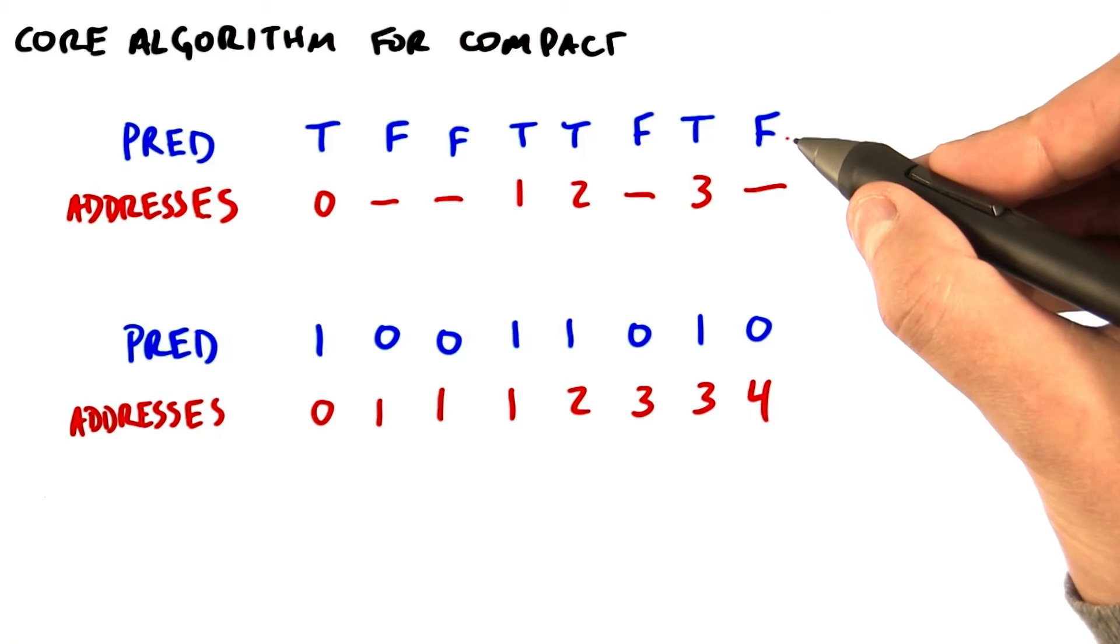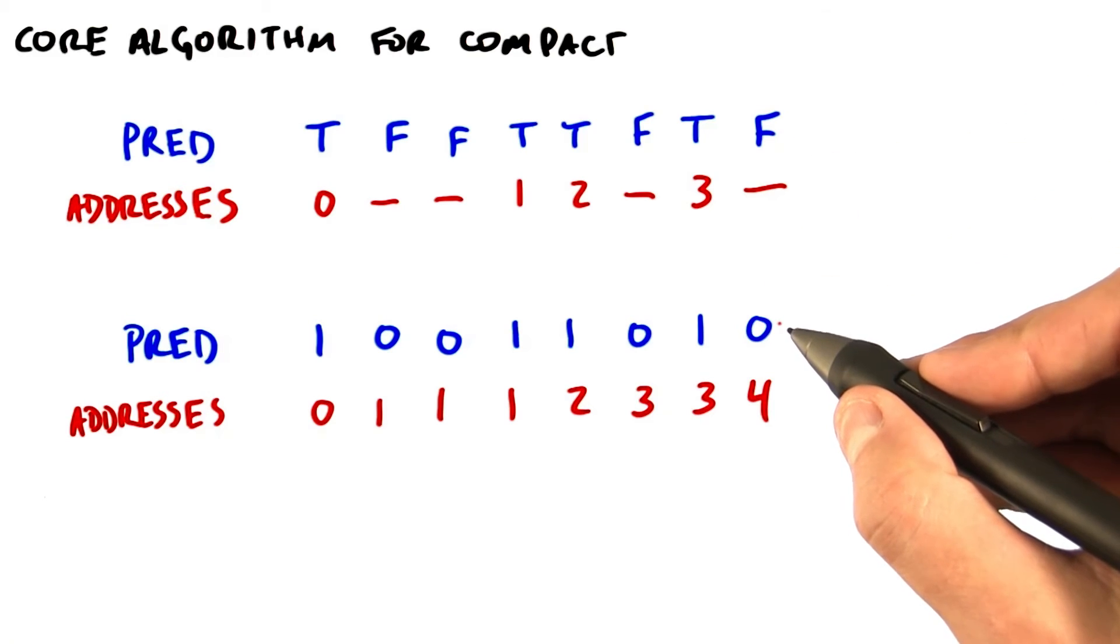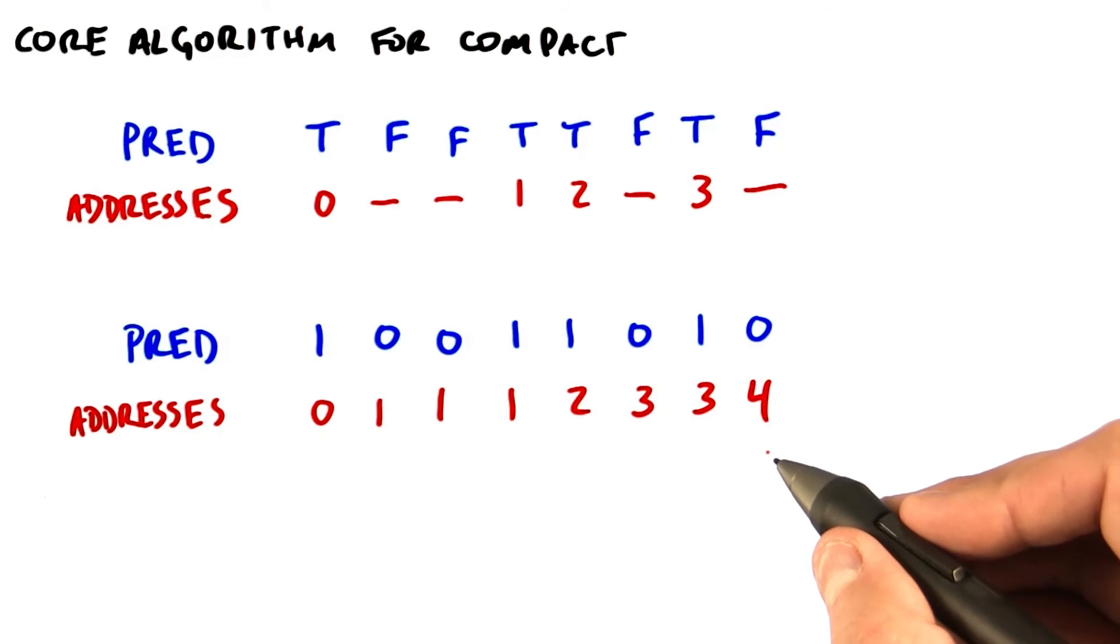So here's our input, a bunch of trues and falses. We're translating it into ones and zeros. And this is our output, our set of addresses here.